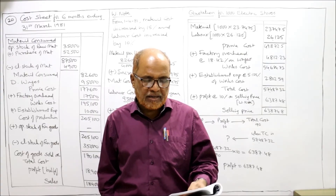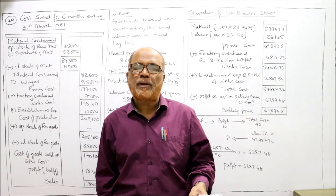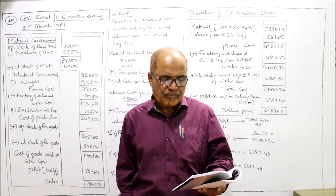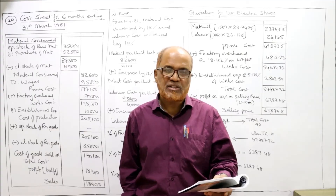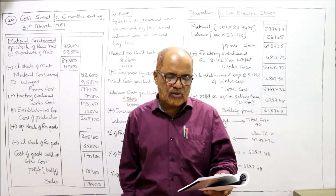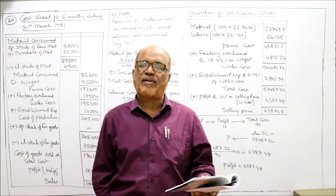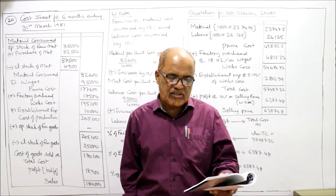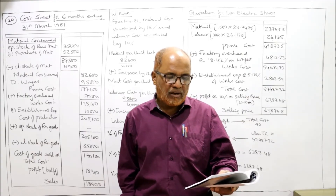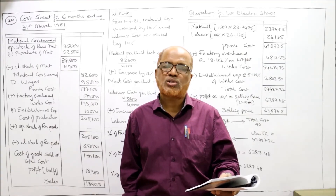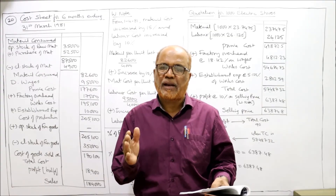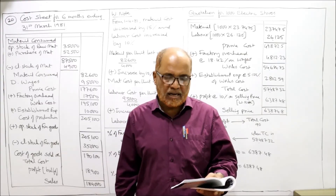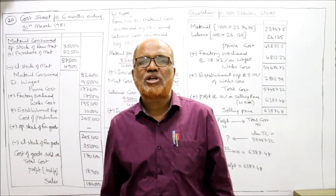Completed stock in hand on 1st October 1980 — completed stock in hand on 31st March 1981: closing stock of finished goods 35,000. Sales are 1,89,000. The number of stoves manufactured during the 6 months was 4,000, including those sold and those in stock at the close of the period. The stoves to be quoted for are of uniform quality and similar to those manufactured during the 6 months. From 1st April 1981, cost of factory labour increased by 10% and material cost increased by 15%.